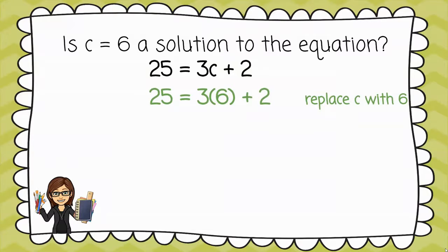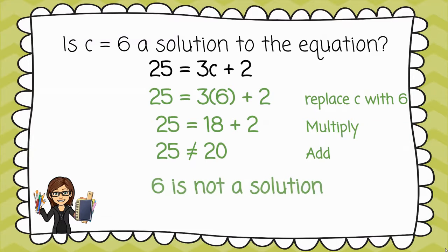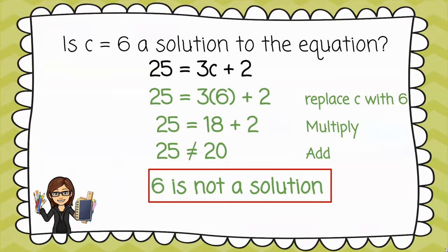I'm going to replace the c with a 6. You'll notice that I put it in parentheses so that will remind me to multiply the 3 times 6. If I multiply 3 times 6, I'll get 18, and then I end up with 25 equals 20, which we know is not true. This means that 6 is not a solution to this equation.